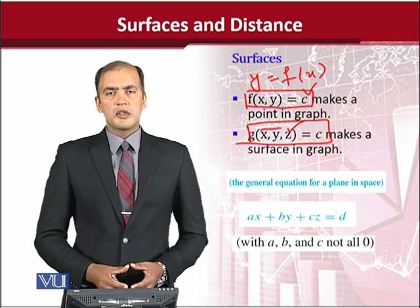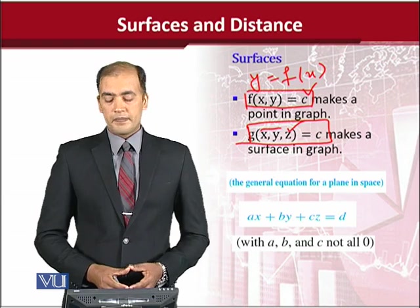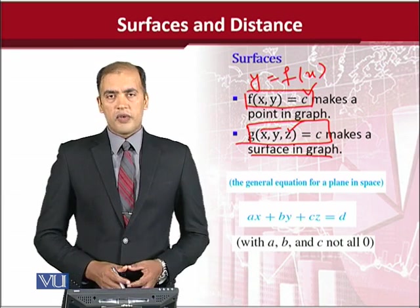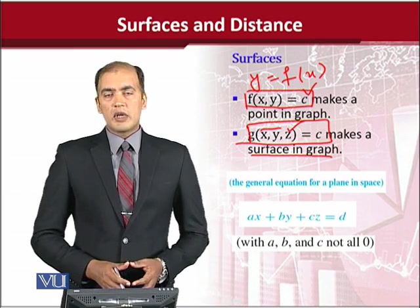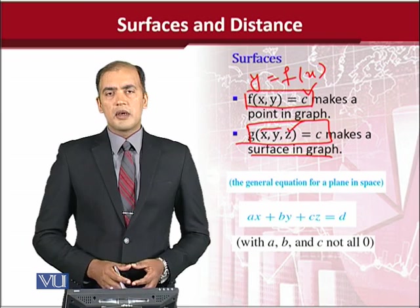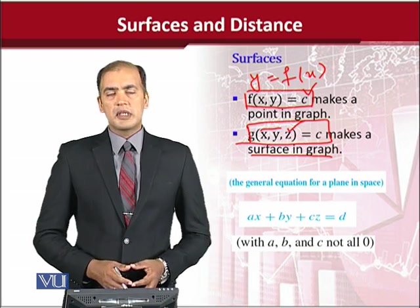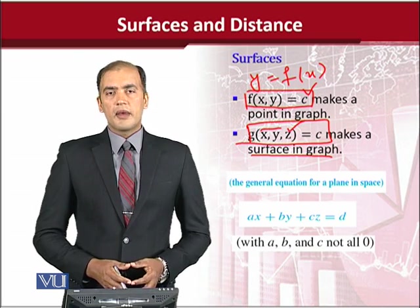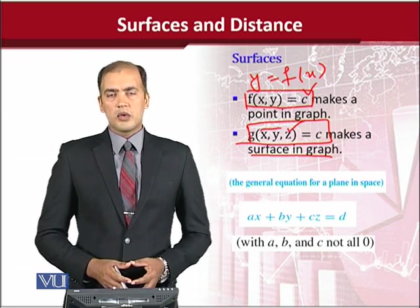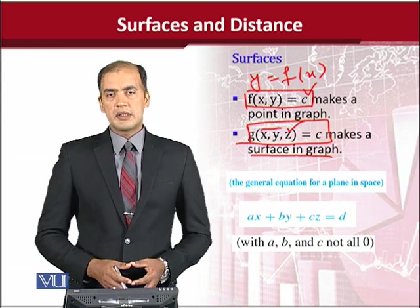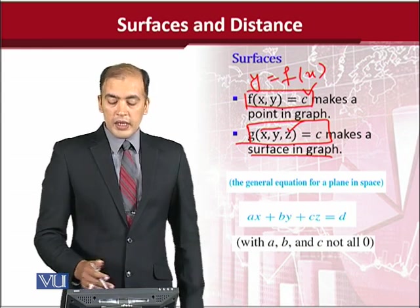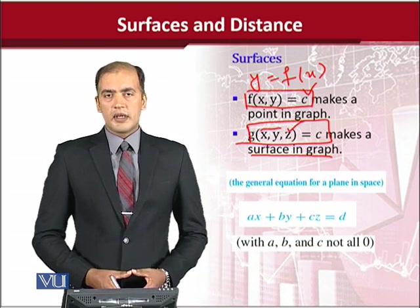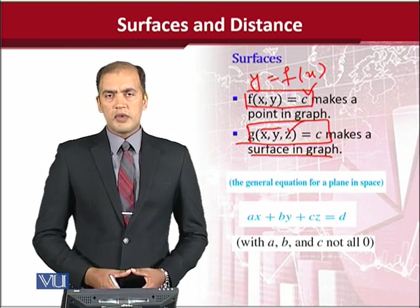And they are equated to some sort of constant because we have brought all the variables to the left-hand side. Definitely some constant should be left on the other side. Now, once we make the graph of this sort of function, which is having multiple independent variables, there may be more than two, but in this case we are taking a simple example because our visual world does not allow us to go beyond two independent variables. Now, we get surfaces. We don't get a point. And how these surfaces look like, we shall see in a while.